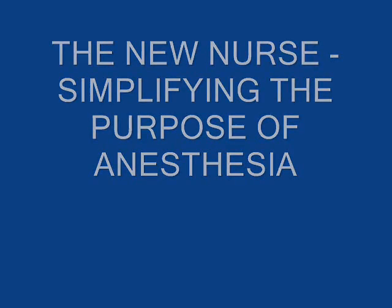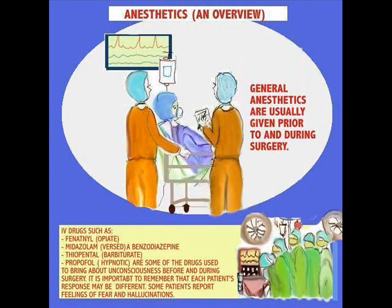Our topic for discussion today is anesthesia and anesthetics — how they're used. Here we have a nurse preparing to take a patient to surgery. She's given report to the anesthetist, the person who gives the anesthesia. When patients are taken to surgery, they have a great degree of anxiety. They're given drugs like midazolam, which is a benzodiazepine, fentanyl, which is an opiate, or propofol — one of those knockout types. The doctor decides what to use for each particular situation.